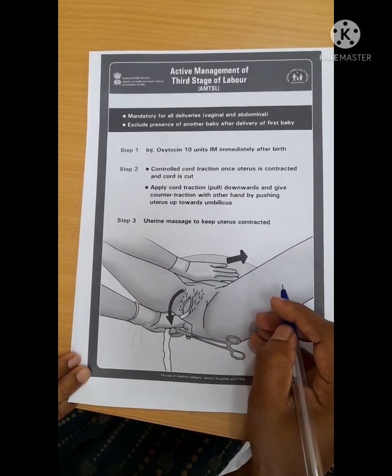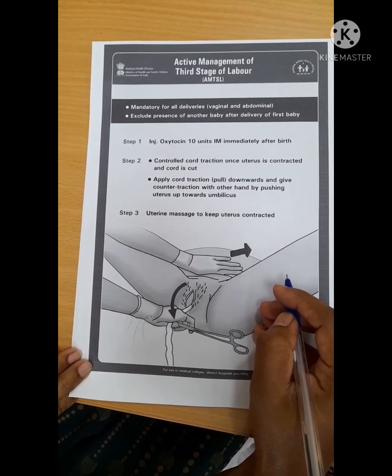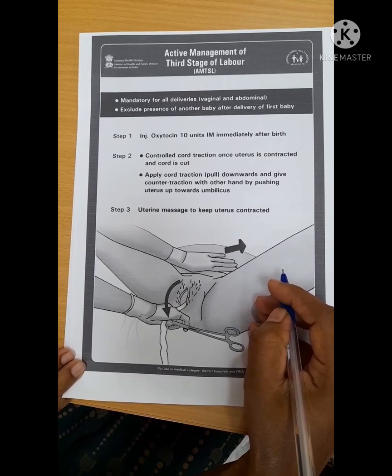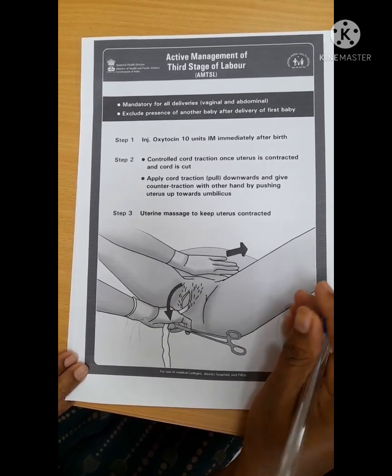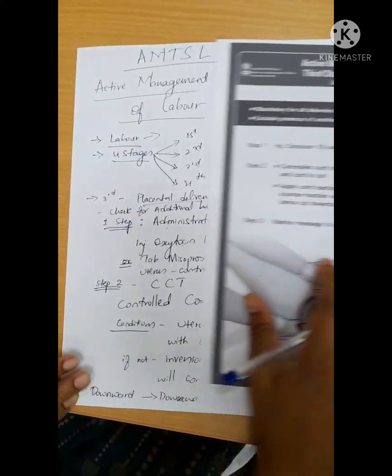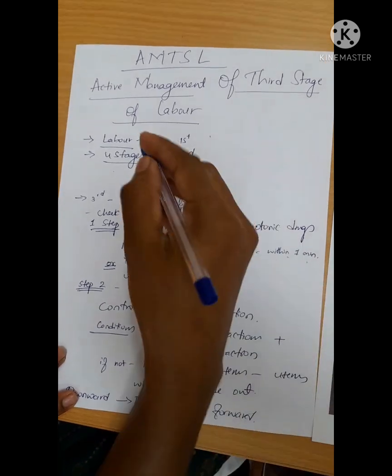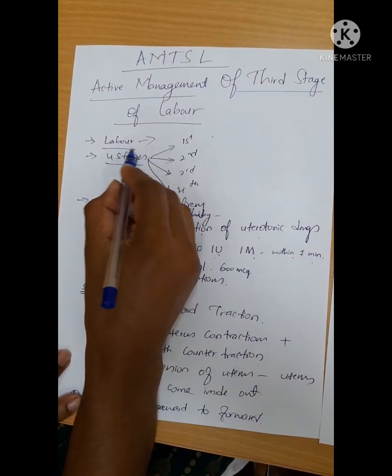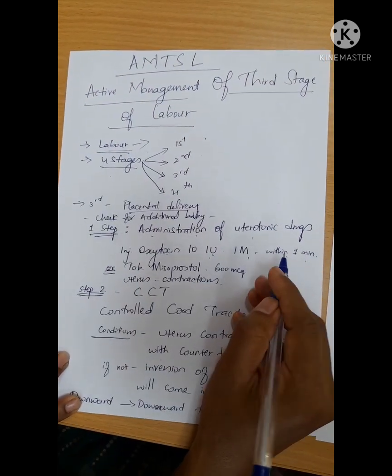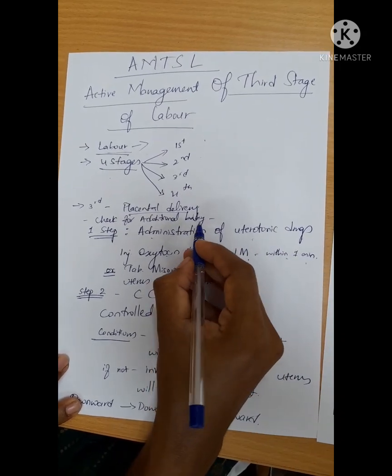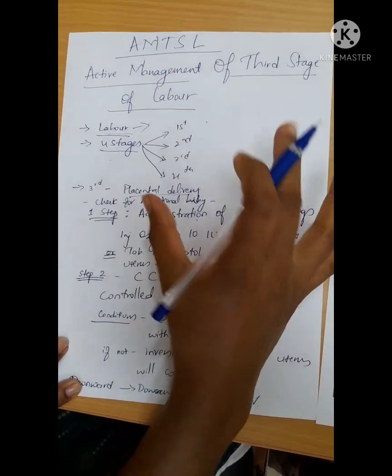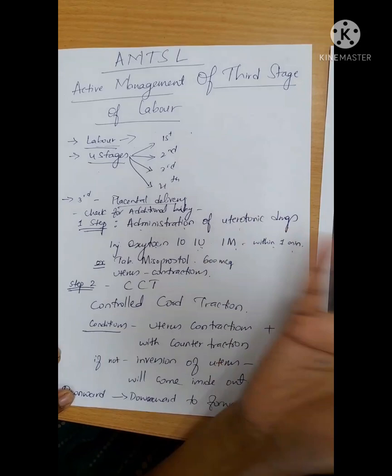Welcome to KNV Academy YouTube channel. In this class, we will discuss AMTSL, which is Active Management of Third Stage of Labor. We'll have some discussion regarding labor. Labor is a series of events that takes place in the genital organs where through the birth canal, all the products of conception will come out of the womb through the vagina or birth canal.